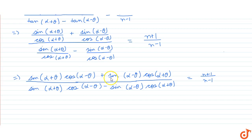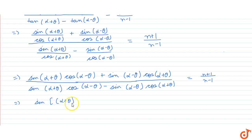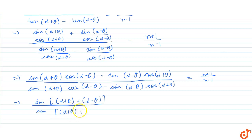Looking at the numerator, we can see this is the formula for sin(A + B), and the denominator term is the formula for sin(A - B). So the left-hand side simplifies as sin[(α + θ) + (α - θ)] / sin[(α + θ) - (α - θ)] = (n + 1)/(n - 1).